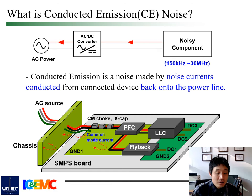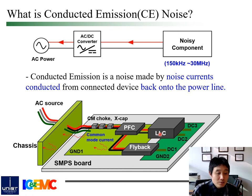Conducted emission is a noise that is made by a noise current conducted from a connected device back onto the power lines. It occurs at a relatively low frequency range, roughly from 150 kHz to 30 MHz. In power converters such as switched mode power supplies, conducted emission occurs at switching frequencies because of alternating current. Today, I will explain the noise source modeling for conducted emission with the example of a flyback converter.